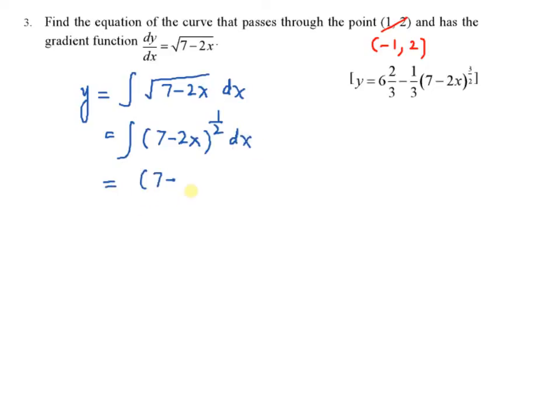First, you copy down the inside function, 7 minus 2x power half plus 1, the power. So it becomes 3 over 2 divided by 3 over 2. Remember to differentiate the inside function, which is negative 2. And the last one, you should put plus c there. So y equal to negative 7 minus 2x power 3 over 2 over 3 plus c.